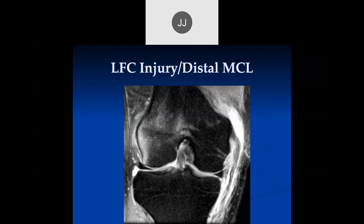Here we can see the medial collateral ligament, and on the axial images there's a lot of increased signal intensity within it. And these are areas where you see the posterior oblique ligament, which is just difficult to divide on MR into its different components — it's just this posterior medial capsule. One thing about the oblique ligament: it produces rotatory instability.